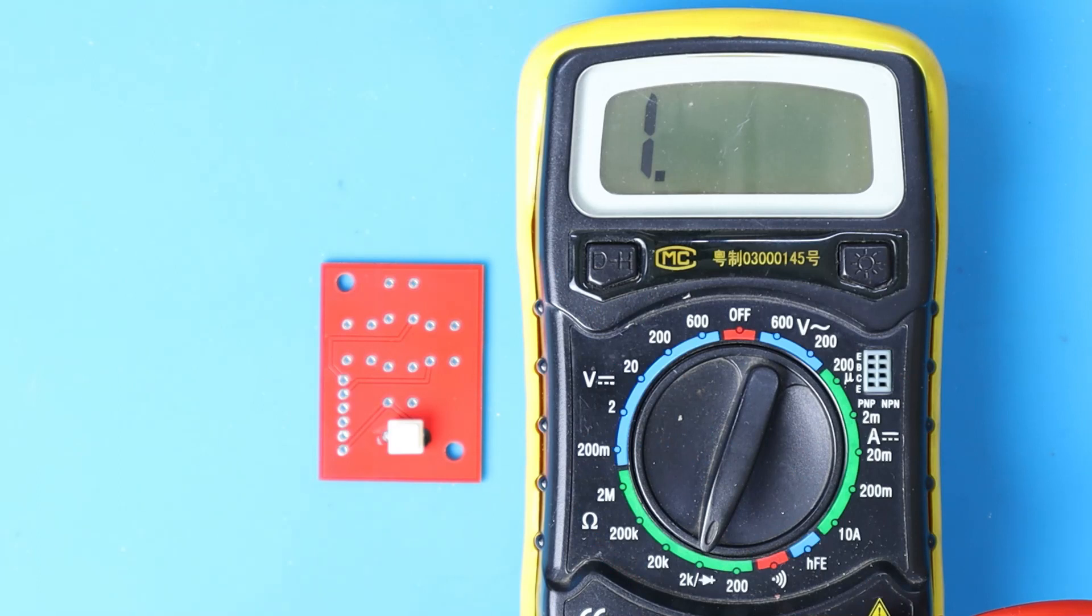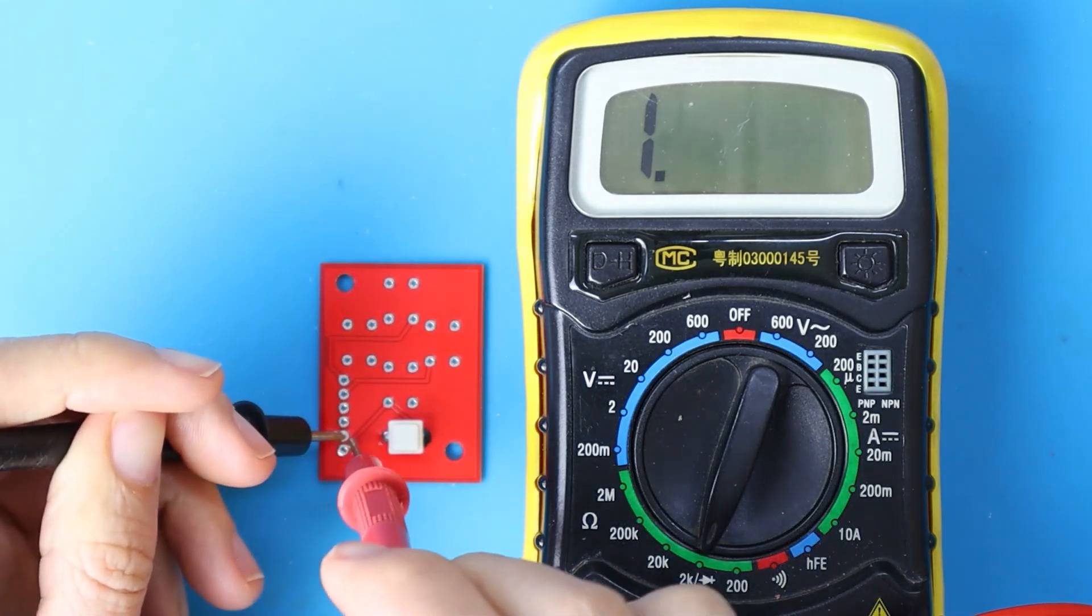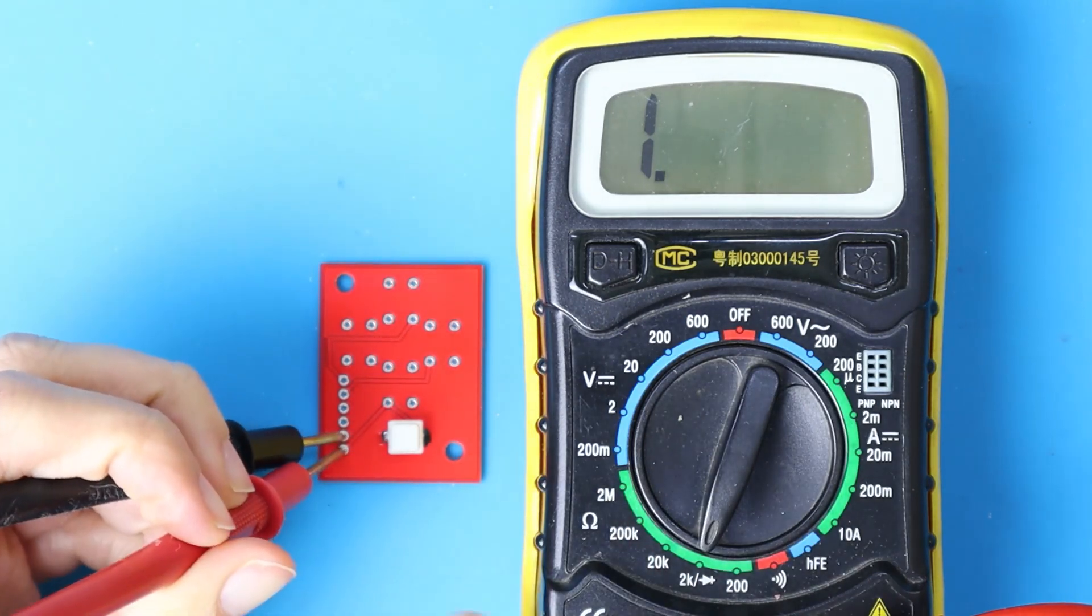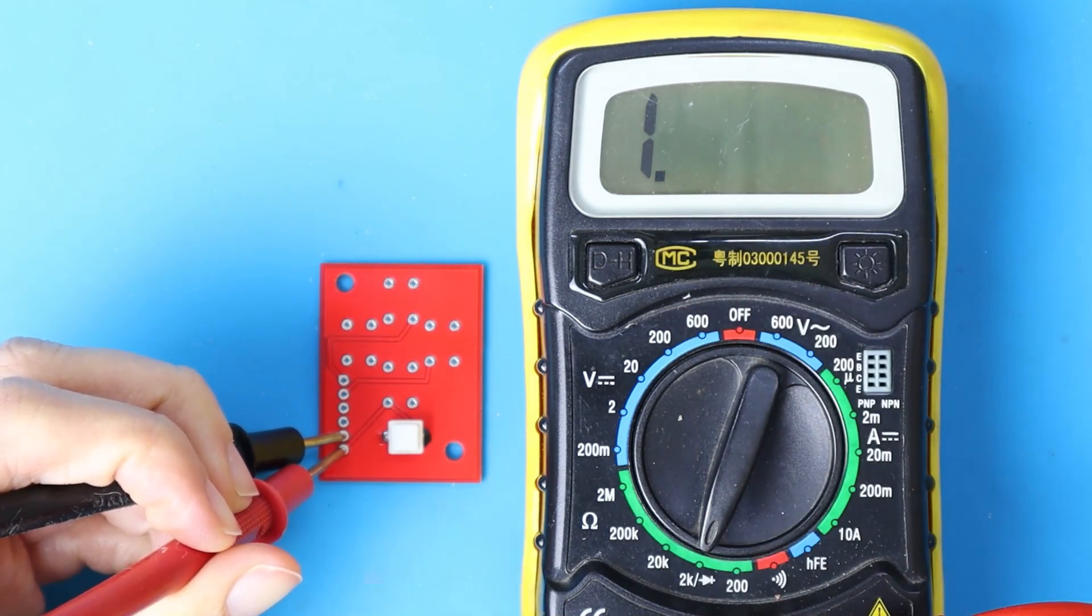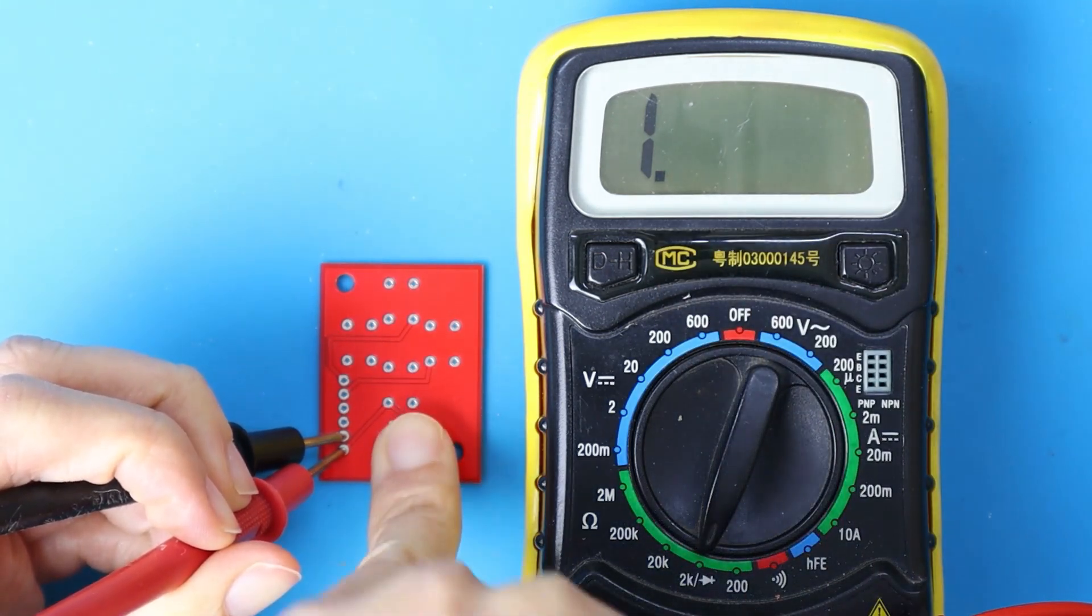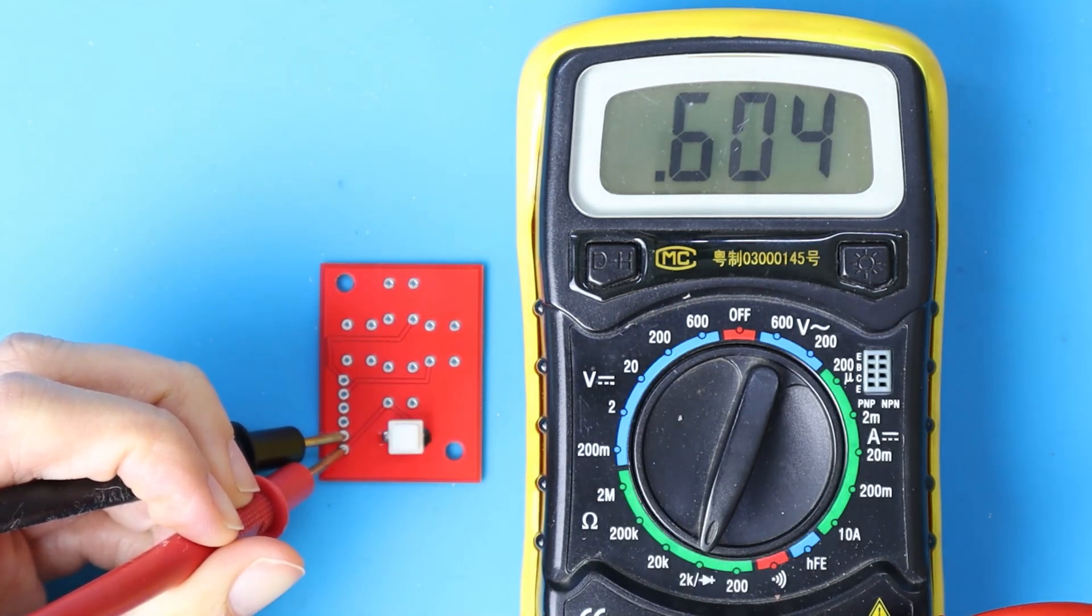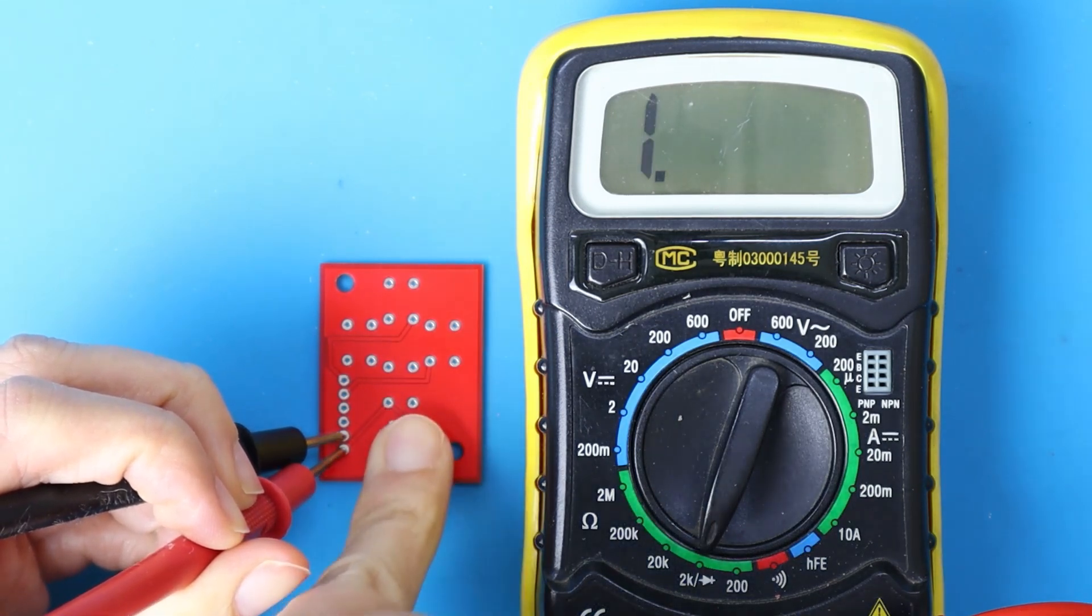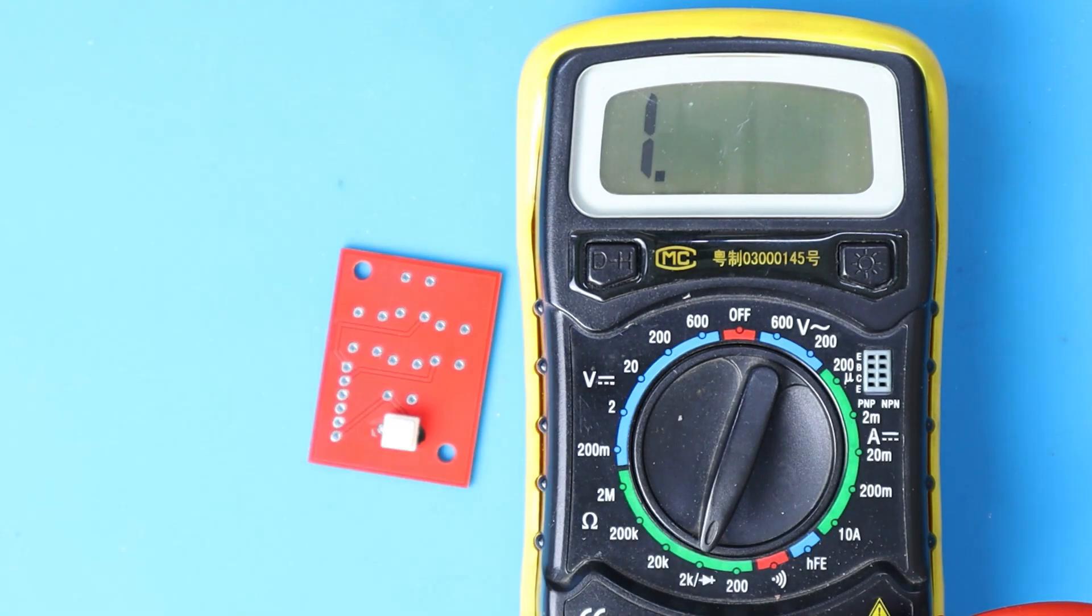I will connect pin number six and number five, which is for this button. You see when I'm not pressing it, it's not connected. But when I push the button, we get a value around 600 ohms. So yeah, this works. The conductive paint works. Let me try it with the final project and I'll come back to you. Happy making!